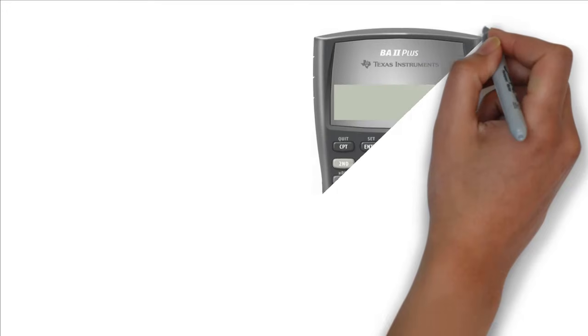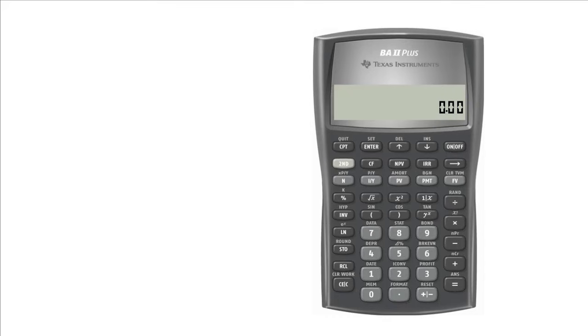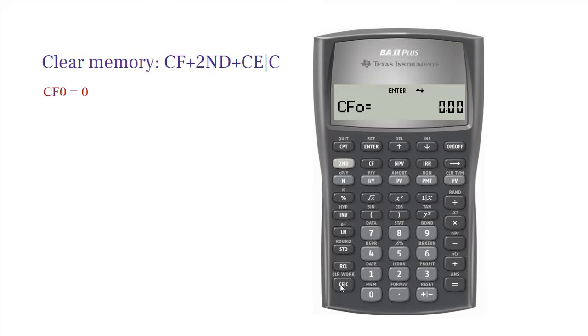In your calculator, first step is to clear the cash flow memory. You do so by clicking CF and then second and finally press CE button. Now, start entering the cash flows one by one. While your calculator screen is showing CF0, press 0 and then press Enter.